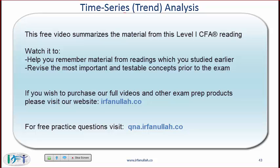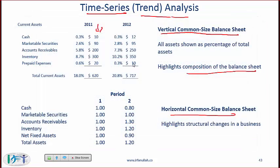The idea is to highlight the composition of the balance sheet. So for example, for a given company between 2011 and 2012, what is changing? If you simply look at the dollar amount from 10 million to 12 million that is going up, but if you look at the percentage number, cash is 0.3% of total assets in 2011 and 0.3% of total assets in 2012. So the composition of cash as a percentage of total assets is not changing.